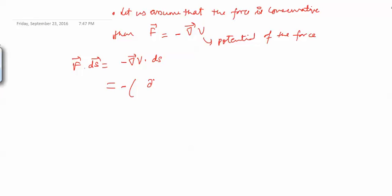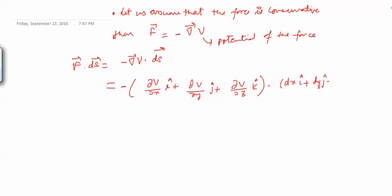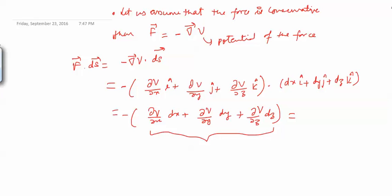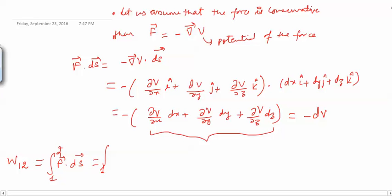The gradient of V in Cartesian coordinates is (∂V/∂x)î + (∂V/∂y)ĵ + (∂V/∂z)k̂, and ds = dx î + dy ĵ + dz k̂. So F·ds equals minus [(∂V/∂x)dx + (∂V/∂y)dy + (∂V/∂z)dz], which is the total derivative of V. Therefore F·ds = -dV. So the integral from 1 to 2 of F·ds, which is the work done W₁₂, equals minus the integral of dV, giving V₁ minus V₂.